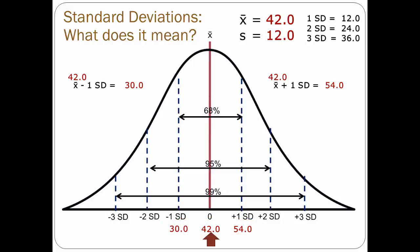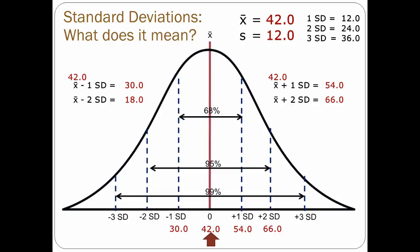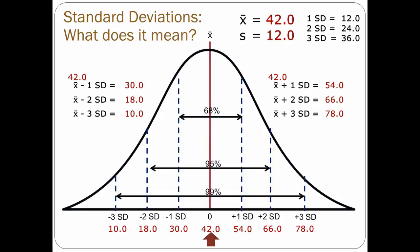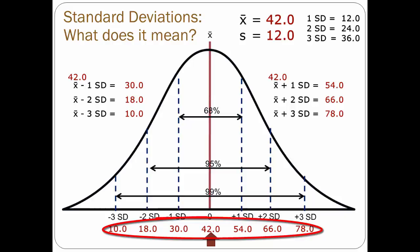For two standard deviations: 42 plus 24 is 66, plotted at two standard deviations above the mean, and 42 minus 24 is 18, plotted at two standard deviations below the mean. Assuming normally distributed scores, 95% of the scores would be between 18 and 66. For three standard deviations: 42 plus 36 is 78, and 42 minus 36 is 6 — wait, actually 10 — plotted at minus three standard deviations. So 99% of the scores would be between 10 and 78, within plus or minus three standard deviations of the mean.